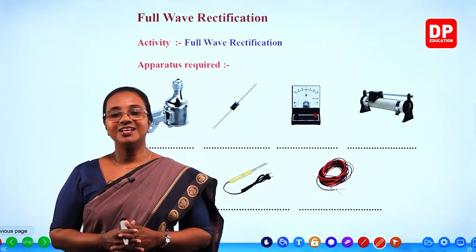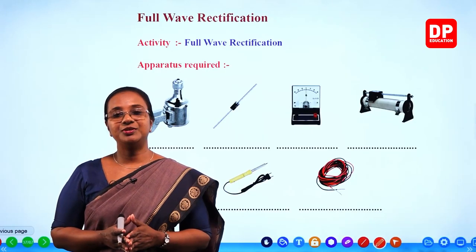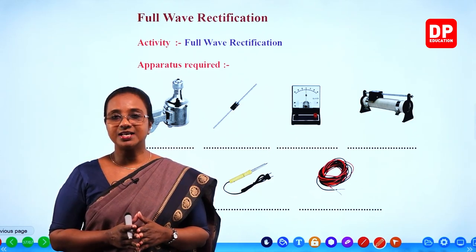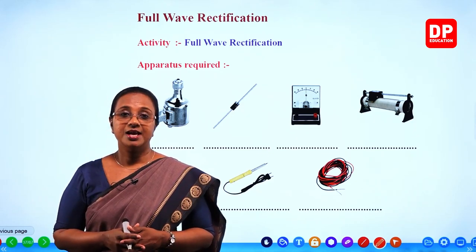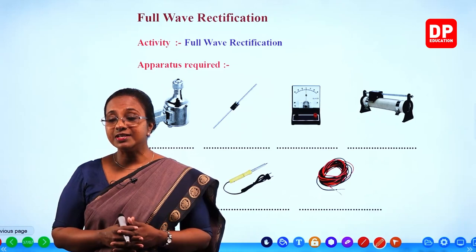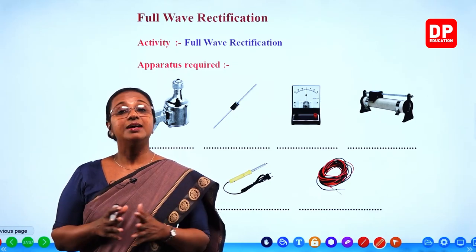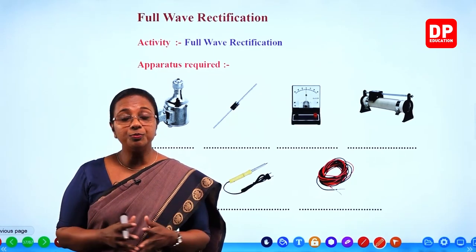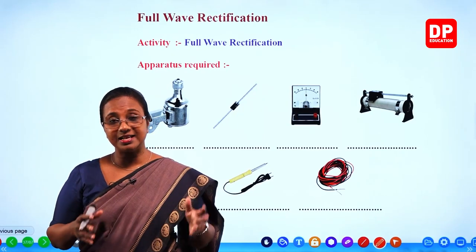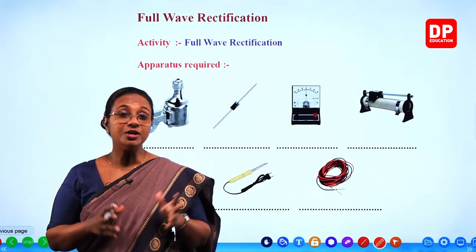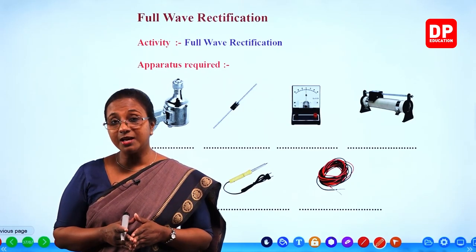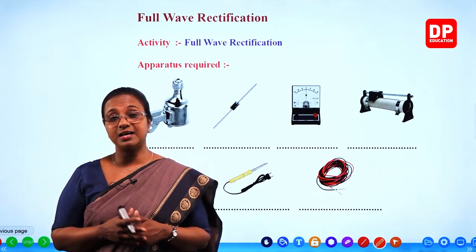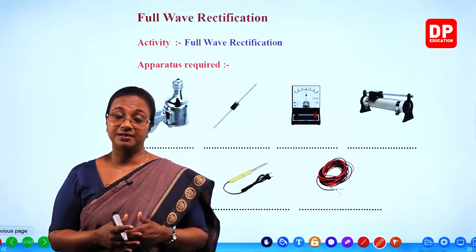Hello, my dear students, welcome to today's lesson. Today we are going to discuss electronics. In the previous chapters, we looked at what semiconductors are and the doping process of semiconductors, which gives rise to the P-type (positive type) semiconductor and the N-type (negative type) semiconductor.